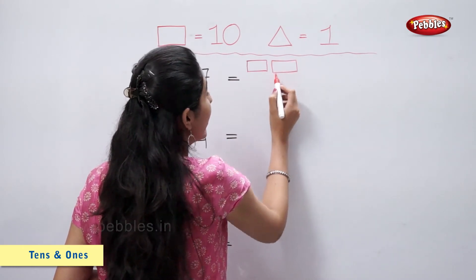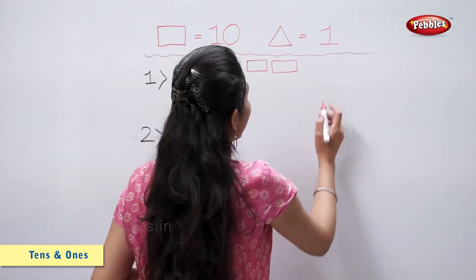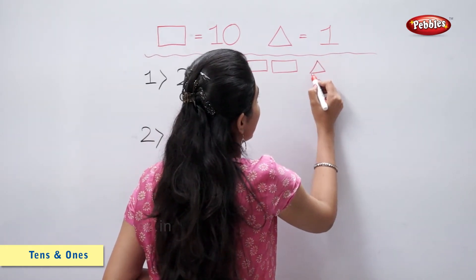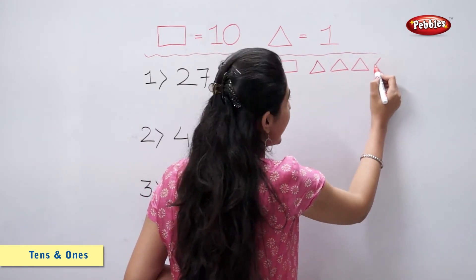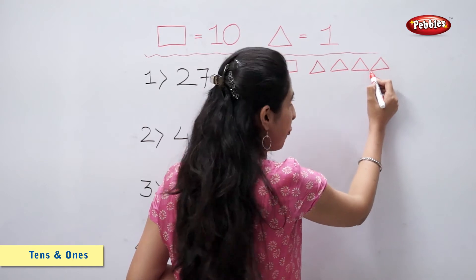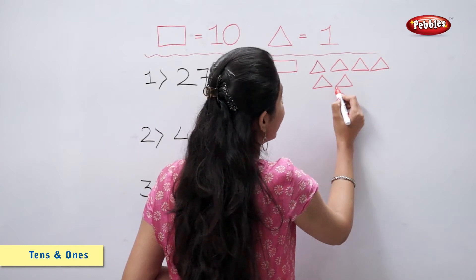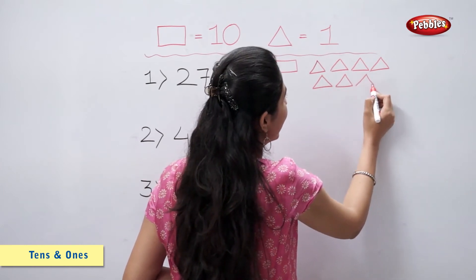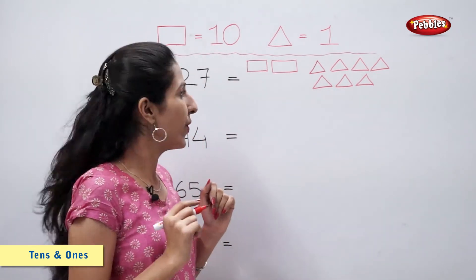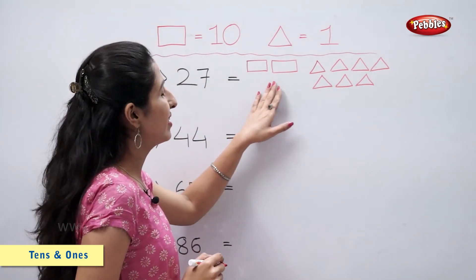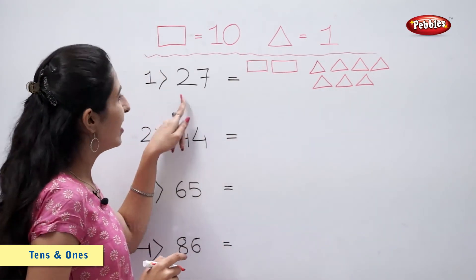1, 2 - two rectangles. 1, 2, 3, 4, 5, 6 and 7 - seven triangles. So 2 rectangles, 7 triangles makes number 27.